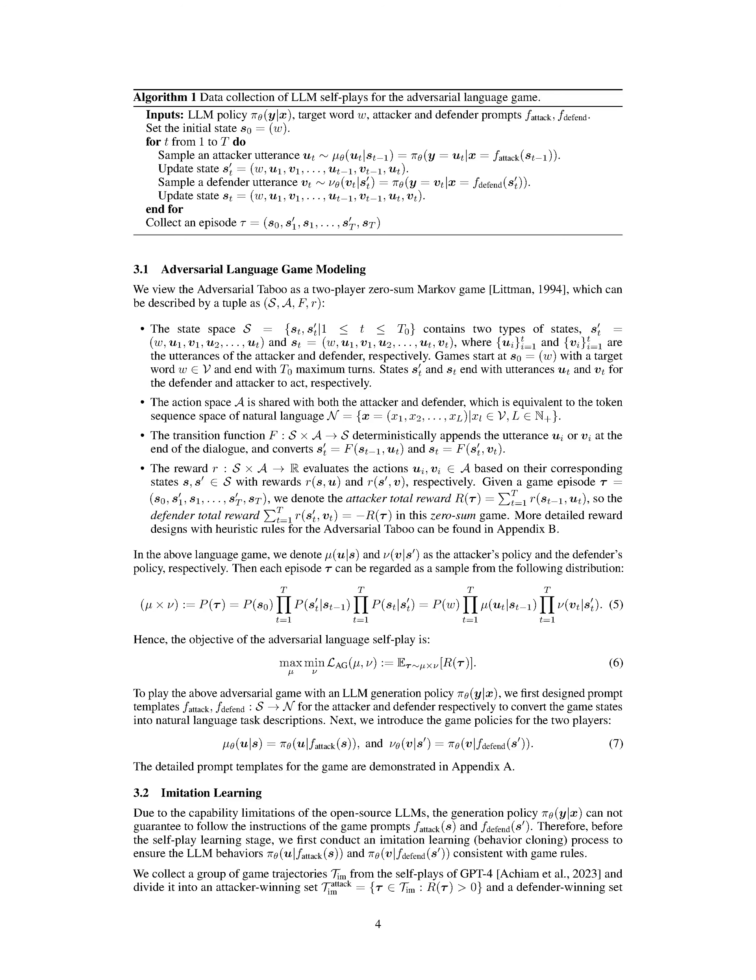Section Summary. In the adversarial taboo game, an attacker aims to make a defender say a target word without directly mentioning it, while the defender must guess the word without saying it. This game is modeled as a two-player zero-sum Markov game with a maximum number of turns, where the players take turns speaking based on prompt templates designed for each player. The objective is for the attacker and defender to play this adversarial game using language generation policies to achieve their respective goals.